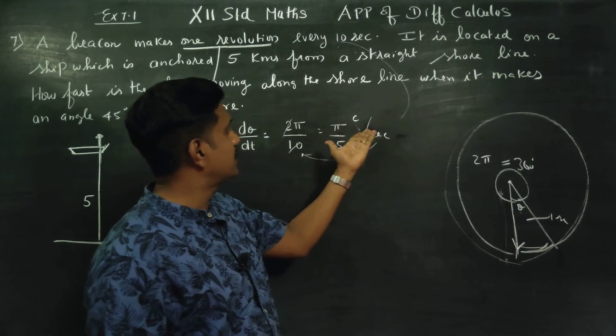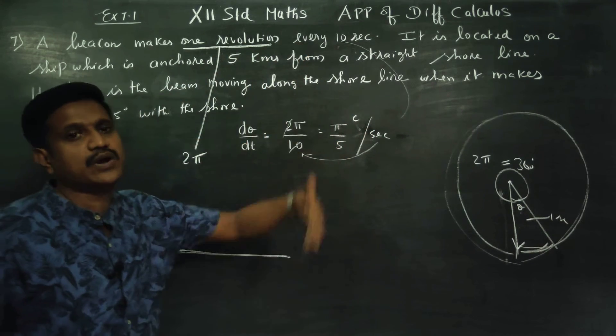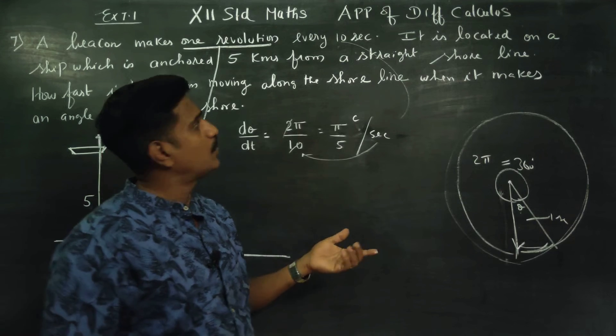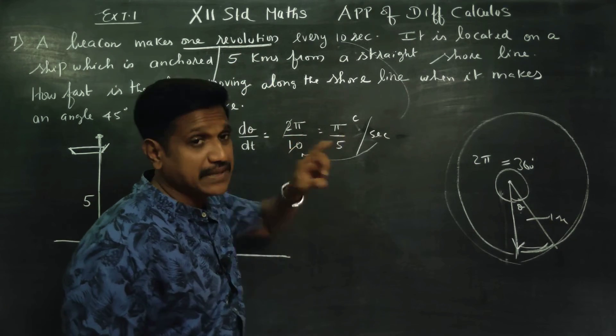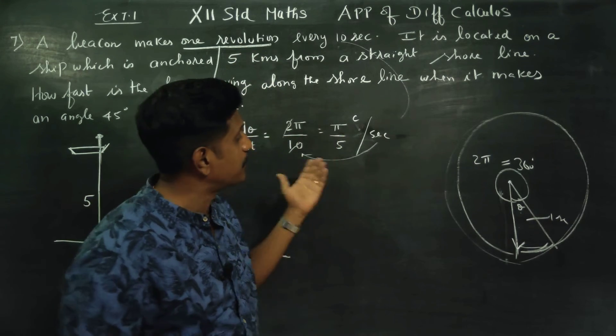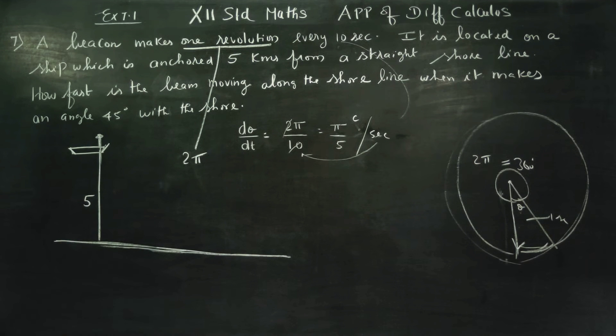So dθ/dt equals 2π divided by 10, which is π/5. Two pi is one full revolution — that is the mathematical term for one revolution. Now let's proceed.